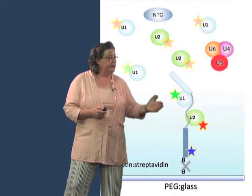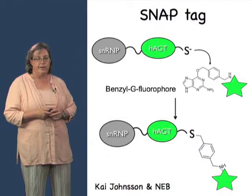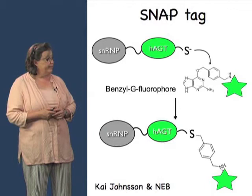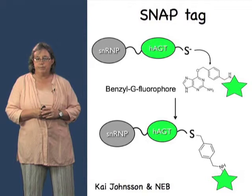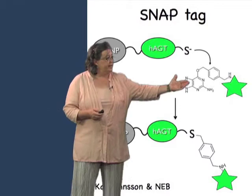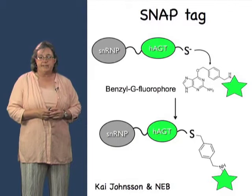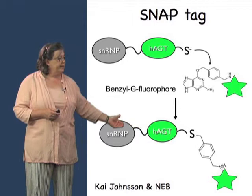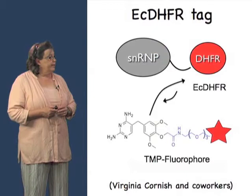We also had to develop ways of tagging the SNRPs to look at them coming and going in real time. We're using two protein tags. One is the SNAP tag developed by Kai Janssen, available through New England BioLabs. SNAP is based on a suicide enzyme that removes alkyl groups from guanine nucleotides in DNA, transferring those alkyl groups to itself. If you have benzyl guanine with a fluorescent dye attached, the SNAP tag protein will transfer that dye to itself. If you've made a fusion protein between the SNAP tag and your SNRP protein, you can specifically label that SNRP protein.